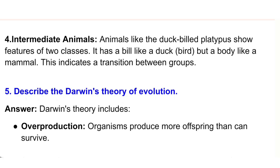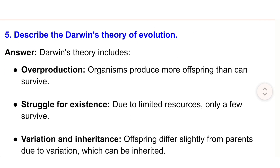4) Intermediate animals — animals like the duck-billed platypus show features of two classes: it has a bill like a duck (bird) but a body like a mammal, indicating a transition between groups. 5) Darwin's theory of evolution includes overproduction — organisms produce more offspring than can survive.